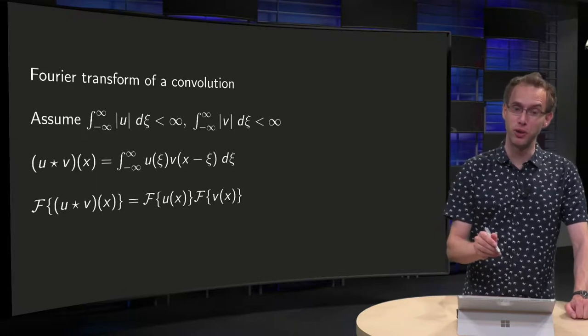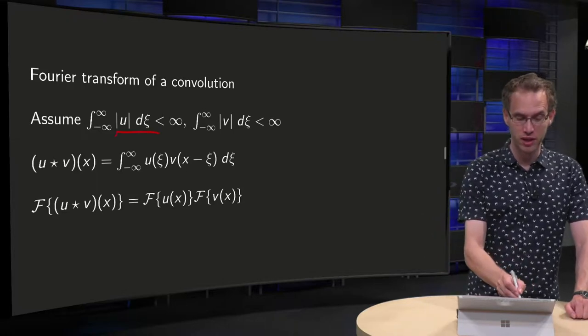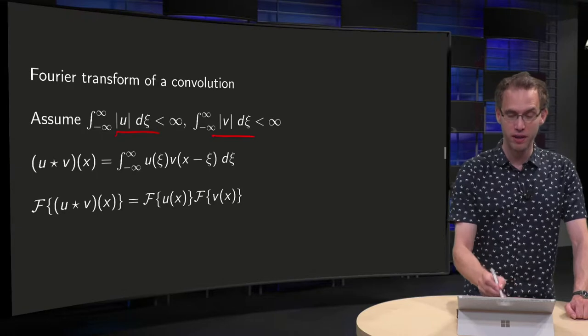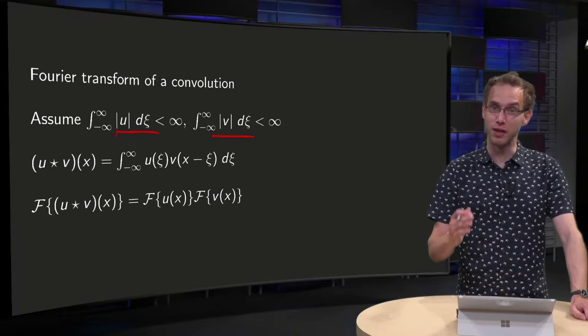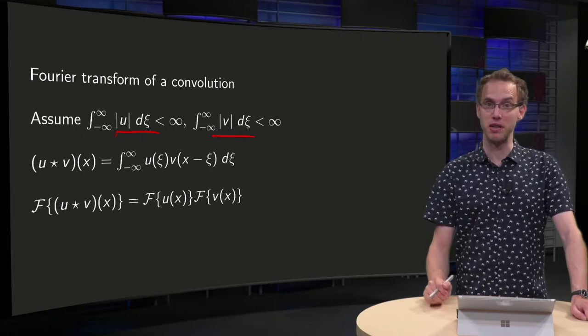Suppose we have two functions u and v, such that the integral of u and v of the absolute value from minus infinity to infinity is both finite, so we can compute Fourier transforms later on.